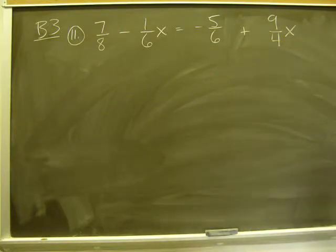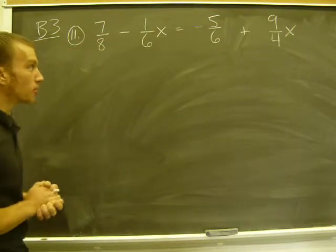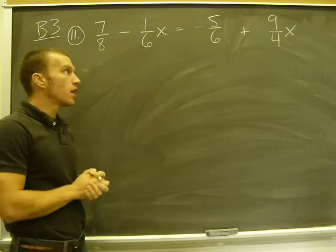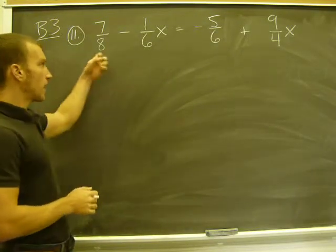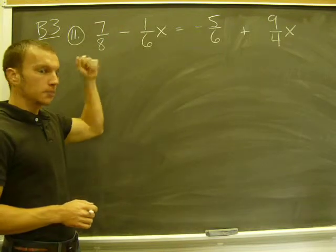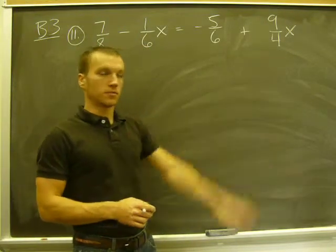The first thing I have to do is find the least common denominator. I see my denominators are 8, 6, and 4. I need to find the smallest number that goes into 8, 6, and 4, and that should be 24. 8 will go into 24 three times, 6 will go into 24 four times, and 4 will go into 24 six times.